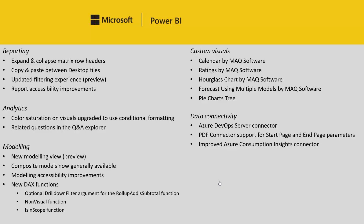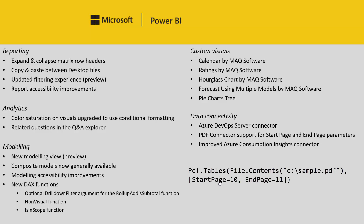We also have an update for our PDF connector. This month we're allowing you to specify start and end pages as optional parameters, which will restrict Power Query to only explore a given range of pages when discovering tables. You'll be able to specify the parameters in the formula generated after connecting to a PDF connector.